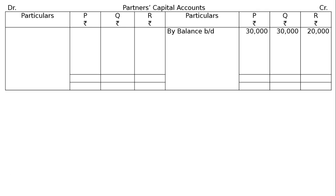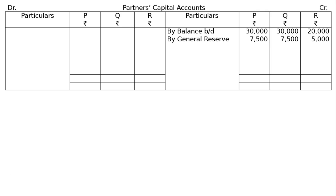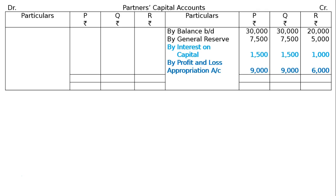Partners' capital accounts for P, Q, and R: Credit side — balance brought down: P Rs. 30,000, Q Rs. 30,000, R Rs. 20,000. By general reserve in 3:3:2 ratio out of Rs. 20,000 — P Rs. 7,500, Q Rs. 7,500, R Rs. 5,000. By interest on capital at 5%: P (Rs. 30,000 × 5%) = Rs. 1,500, Q Rs. 1,500, R (Rs. 20,000 × 5%) = Rs. 1,000. By profit and loss account: divisible profit Rs. 24,000 distributed in 3:3:2 — P Rs. 9,000, Q Rs. 9,000, R Rs. 6,000.